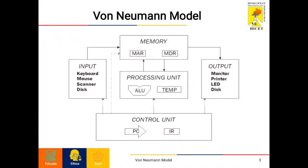The given model is the basic von Neumann structure. It is also known as ISA, Instruction Set Architecture, and has three basic units: the central processing unit (CPU), the main memory unit, and the input/output devices.